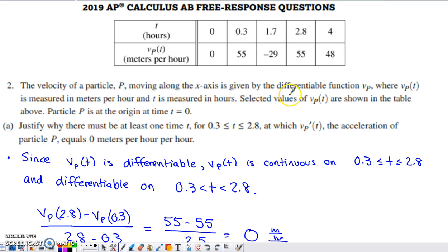The mean value theorem has two things within the hypothesis that need to be true. They tell us that V of P is differentiable, and since V of P is differentiable, it's got to be continuous. If it's differentiable, that implies that it's continuous. The two things within the hypothesis of the mean value theorem that give you the green light are continuity on the closed interval that you're trying to apply it over, and then differentiability on the open interval that you're trying to apply it over.